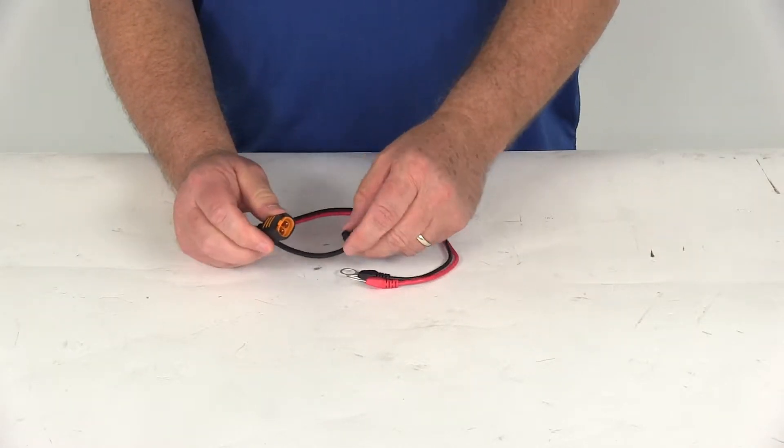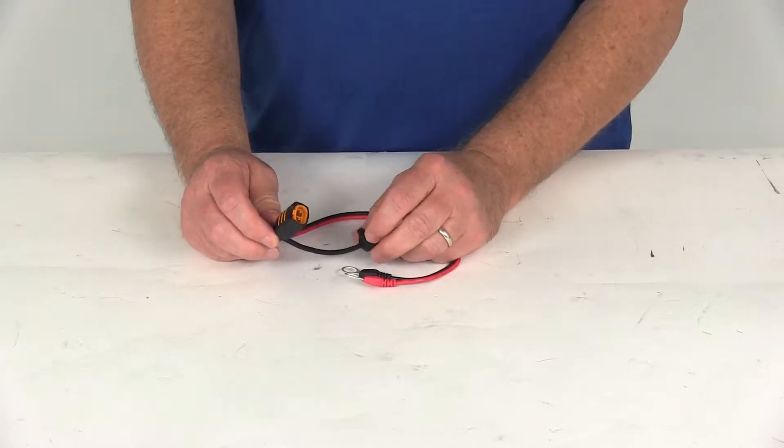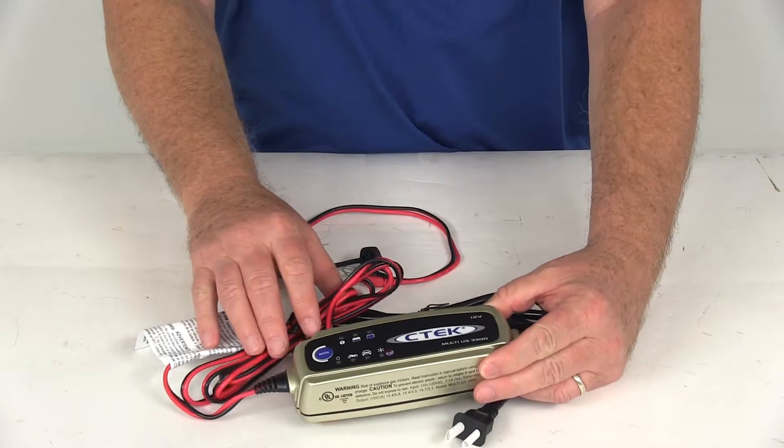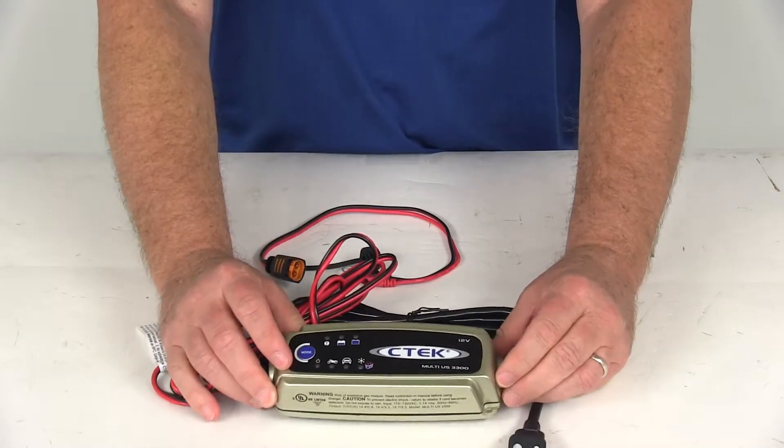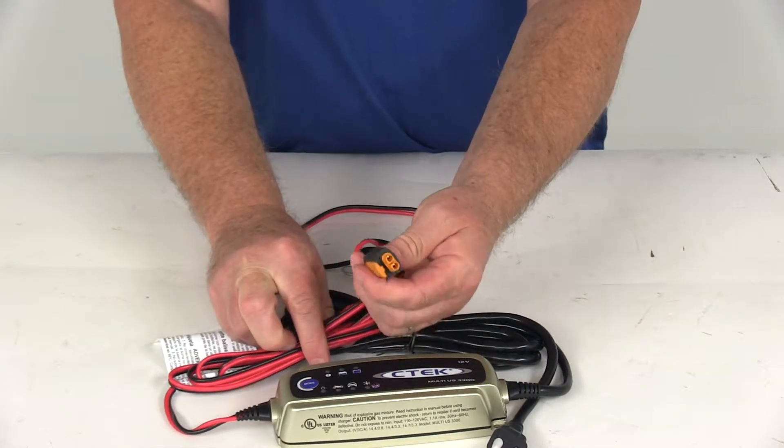You can remove the cover. Simply plug this into any 6-volt or 12-volt CTEK Comfort Connect charger. And just to demonstrate, here's a 12-volt model multi-US3300 charger by CTEK. And if you notice, it has the Comfort Connect ends right here.